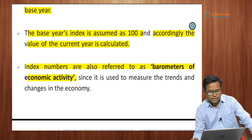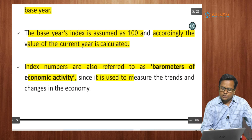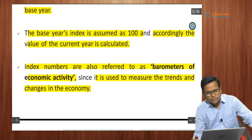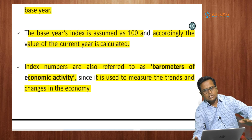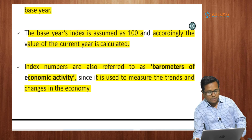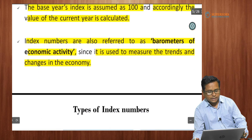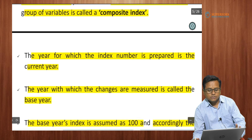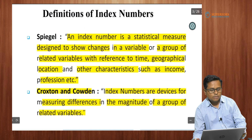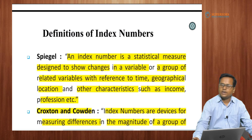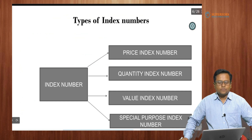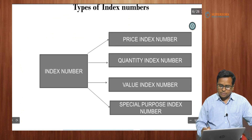Index numbers are also referred to as barometers of economic activity because they are used to measure the trends and changes in the economic system. In this session, we have discussed the features of index numbers as well as two different definitions of index numbers.